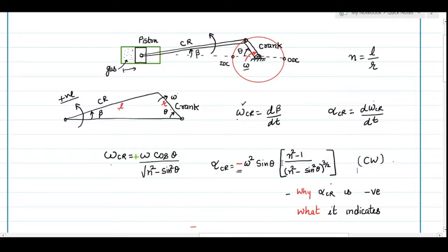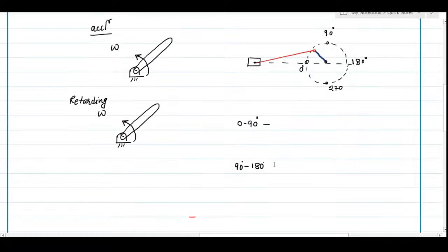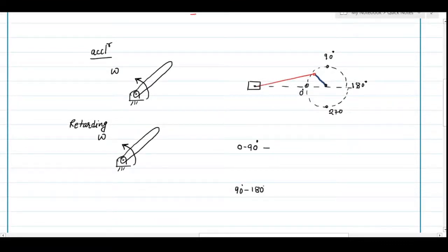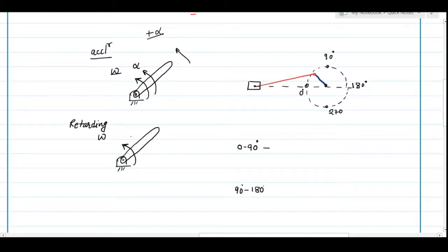To understand this, consider a link pinned at one end and rotating counter-clockwise with angular velocity omega and having positive angular acceleration — meaning its angular velocity is increasing with time. In such a condition, the angular acceleration is in the same direction as rotation. Similarly, if the link is rotating in the same direction but with retardation, the direction of angular acceleration is opposite to rotation — either written as negative angular acceleration or defined as opposite to the direction of rotation.